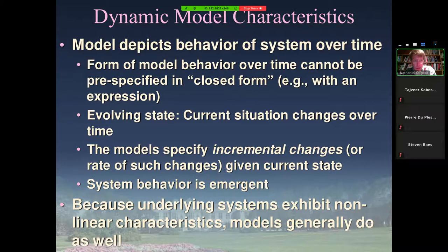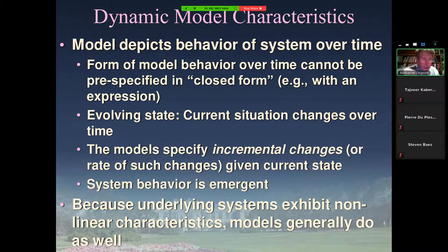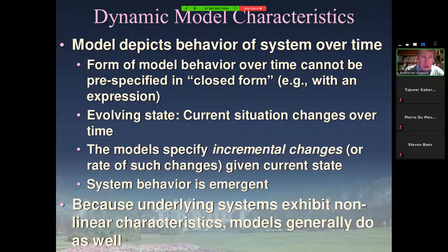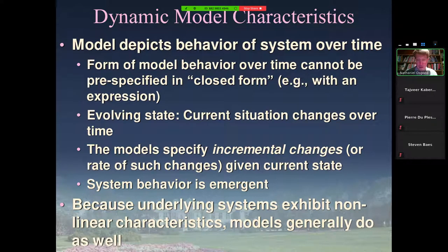The model represents an evolving state — an underlying situation over time. Dynamic models are models where what can happen next depends on what the current situation is. That's in contrast to a system where every minute dice are being rolled and different things occur just based on that — independent of the past history. This is something where possibilities depend on the past history. All three modeling traditions specify incremental changes for what might happen the next little bit given the current situation. Nobody's going to get infected if there aren't any infectives, and nobody's going to get infected if there are no susceptibles.